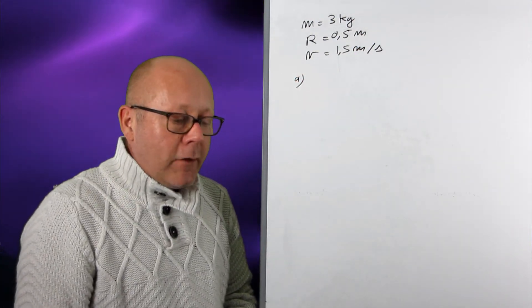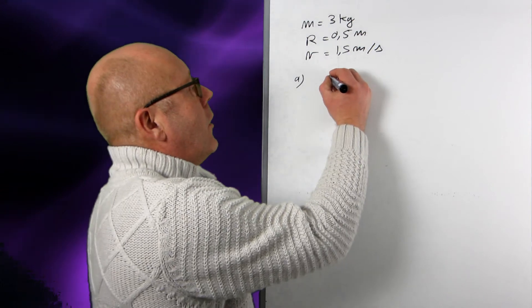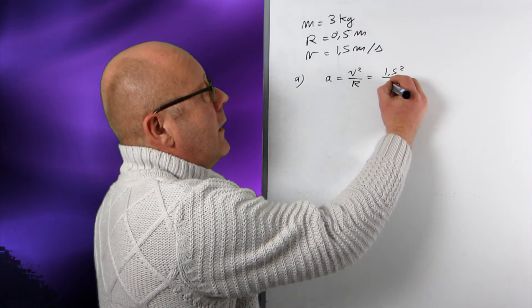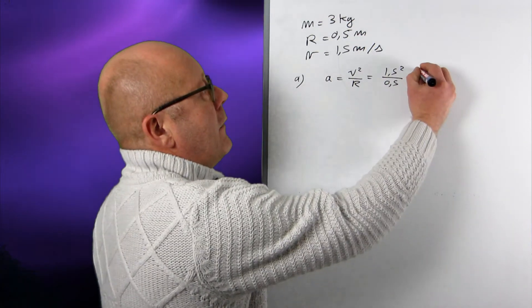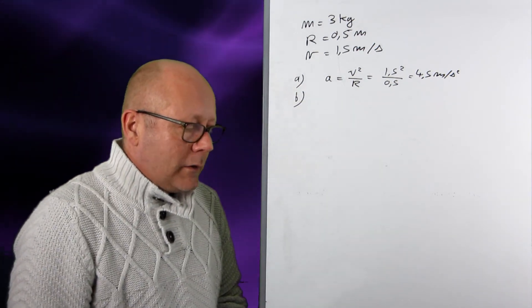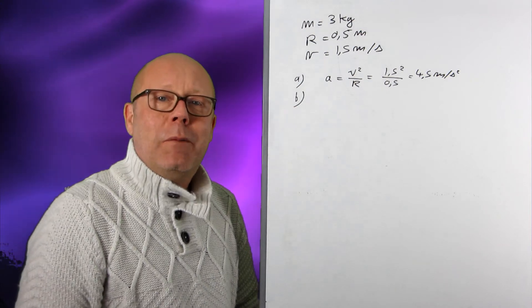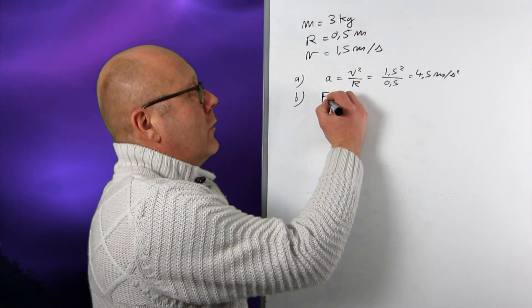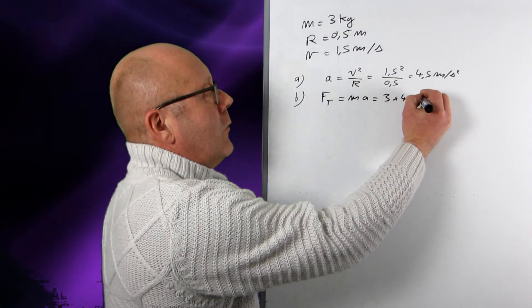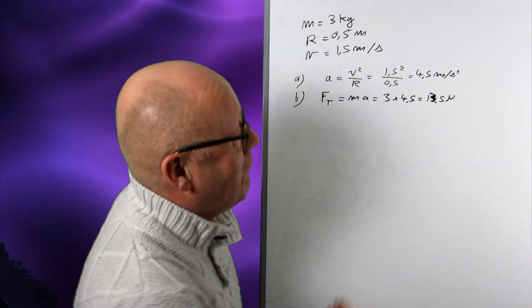Question A. Calculate the centripetal acceleration. Well, they're telling you everything. When they say centripetal acceleration, you know it's going to be V squared on R. So I just plug in the numbers. 1.5 squared divided by 0.5 meters, giving me 4.5 meters per second squared. Little b. What is the tension of the string? Well, I already know the acceleration on the body, so I know what force will be applied on the body. The force of tension will be equal to ma. And I just plug in the numbers. 3 multiplied by 4.5 equals 13.5 newtons.